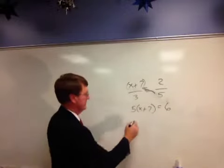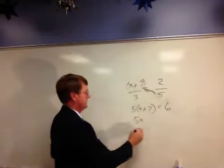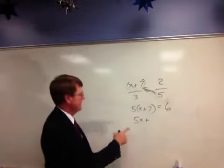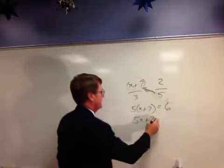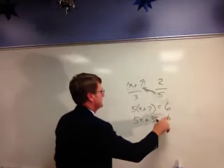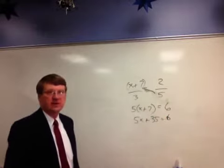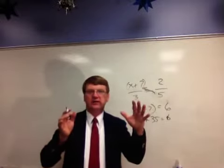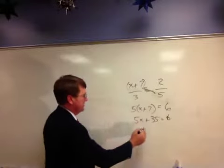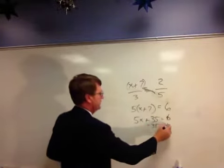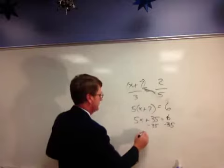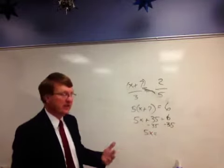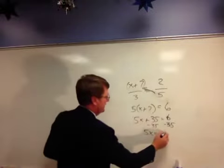Distributive property, 5 times X. And don't forget, most common error, don't forget. 5 times 7, 35. Equals 6. Okay? Now what? Just like with our hands-on equations, and I'll probably do a video on that here pretty soon. Subtract the 35. Undo it. Unhook it. Do the reverse. Six take away 35. You've got to be good with fractions, decimals, negatives. Going backwards. Negative 29.